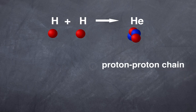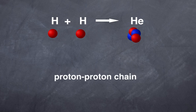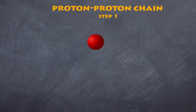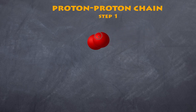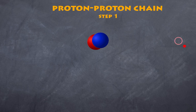The first step of the proton-proton chain involves a single hydrogen atom that another hydrogen atom joins. Almost immediately, one proton converts into a neutron-proton pair. In doing so it releases a positron, which carries away the positive charge, and it also releases a neutrino.